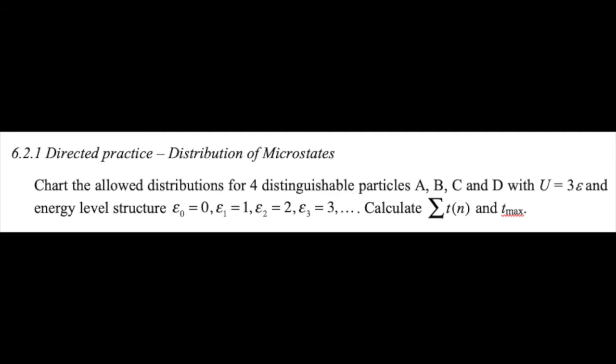Even at constant energy. So let's chart the allowed distributions for four distinguishable particles at a total energy of three epsilon and an energy level structure just like the one in the book, starting at zero and increasing in unit steps. We're going to calculate the total number of configurations as well as T_max, which class of microstates has the highest occupation.